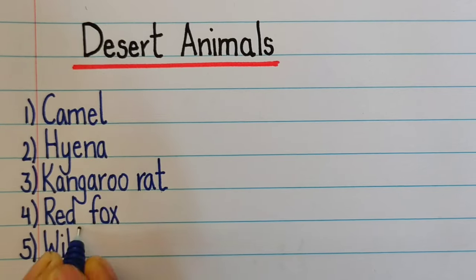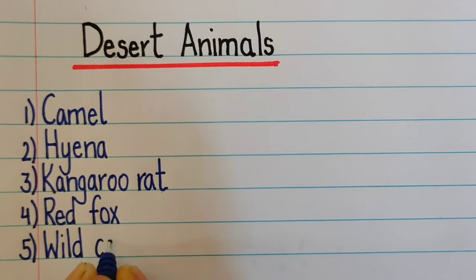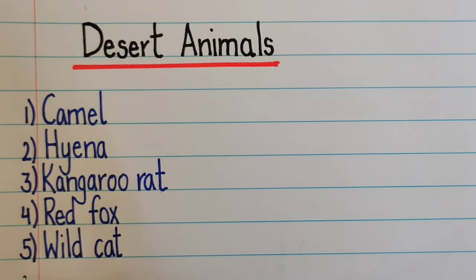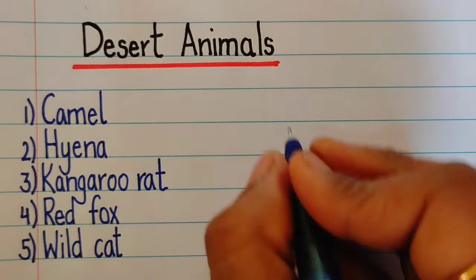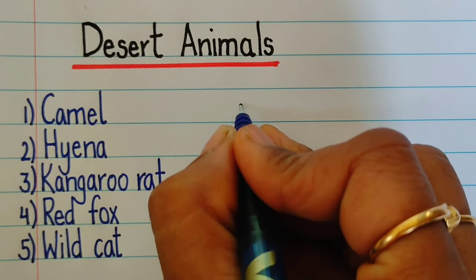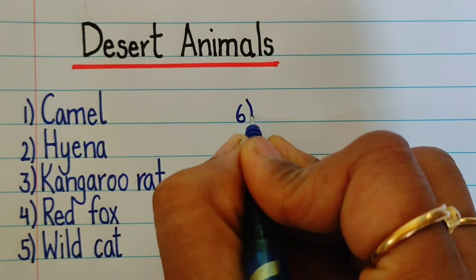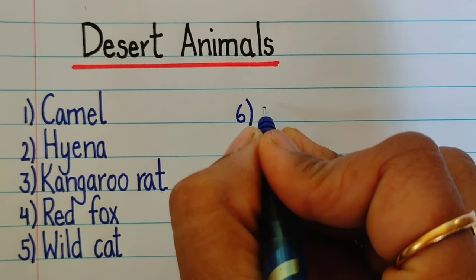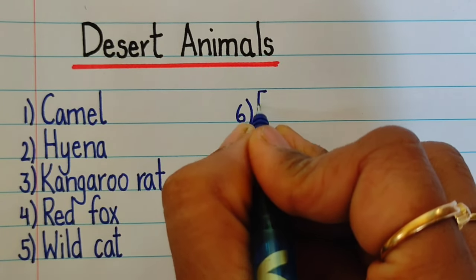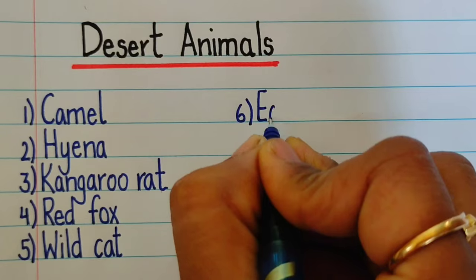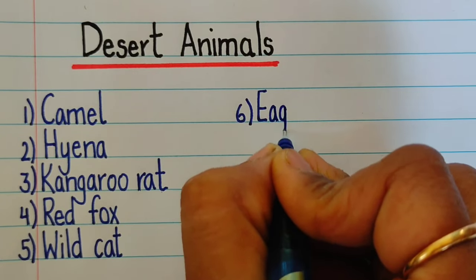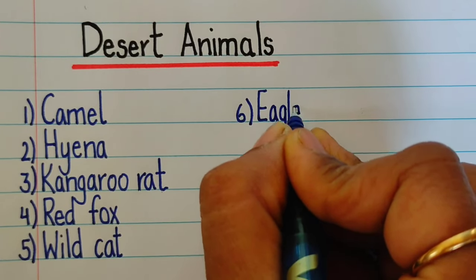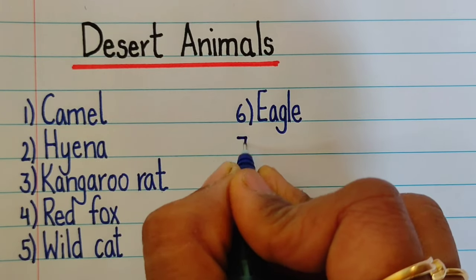Fifth one is wild cat — w-i-l-d, wild, c-a-t, cat. Sixth one is eagle — e-a-g-l-e.